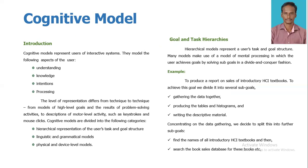A cognitive model represents users of interactive systems. They model the following aspects of the user: understanding, knowledge, intentions, and processing. The level of representation differs from technique to technique, from models of high-level goals and problem-solving activities to descriptions of motor-level activity such as keystrokes and mouse clicks. The cognitive models are divided into the following categories.